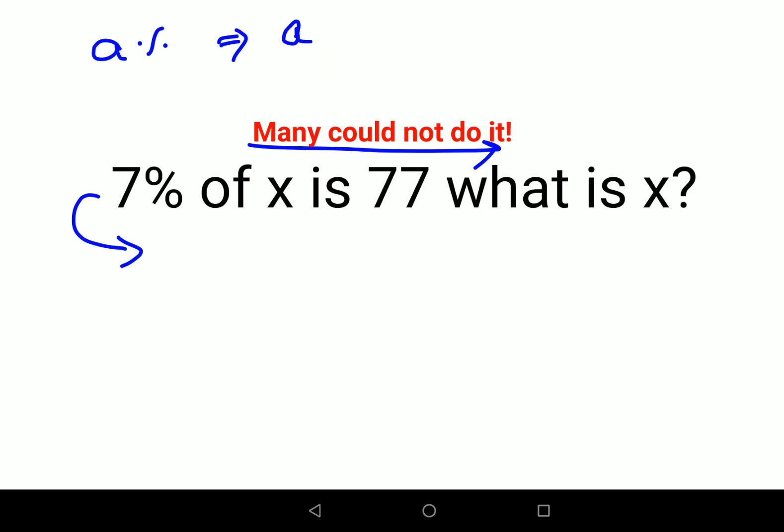mathematical form or in a fraction form by dividing the number by 100, so this becomes 7 upon 100. 'Of' stands for multiplication, x will remain x, 'is' stands for equals, and then we'll keep 77 as